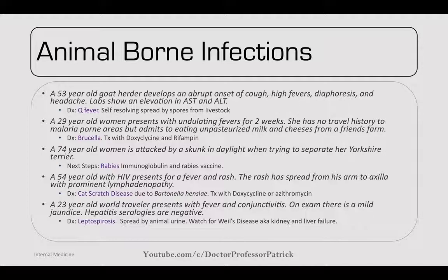A 54-year-old with HIV presents with fever and rash spreading from his arm to his axilla, with prominent lymphadenopathy. Think of cat scratch disease due to Bartonella henselae. Treat with doxycycline or azithromycin. A 23-year-old world traveler presents with fever, conjunctivitis, and mild jaundice, with all hepatitis serologies negative. This can be leptospirosis, spread by animal urine. Watch for Weil's disease — kidney and liver failure — particularly in tropical areas.